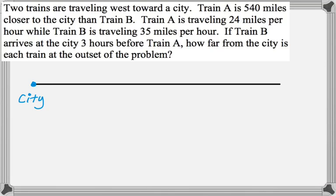So here's my city. And then of the two trains, train A is closer to the city. So this will be train A. And then train B just needs to be the right of that. So there's train B.